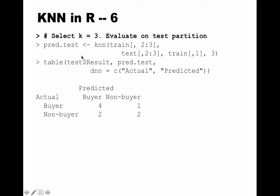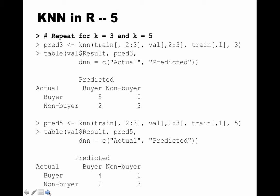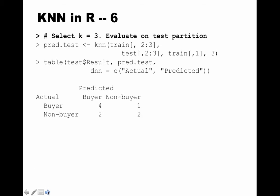We select k=3 and generate the error matrix on the test cases. We call knn with train[,2:3] as training predictors, test[,2:3] as test predictors, train[,1] as the training target, and k=3, storing results in pred.test. In the validation partition we had 10 cases and got 8 correct. In the test partition we have 9 cases and got 6 correct — a slight deterioration, but this is a small dataset so some variance is expected.